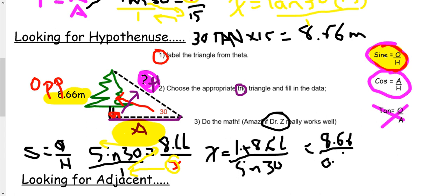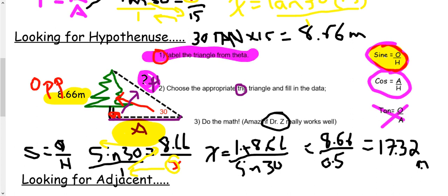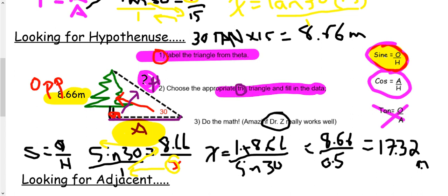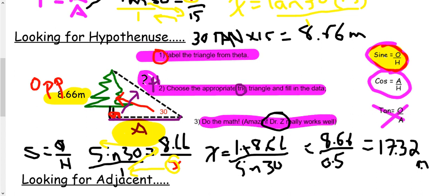In my calculator, I'm going to input 8.66. If I hit sine 30 degrees, I'm going to get 0.5. So 8.66 divided by 0.5, I'm going to get 17.32 — that's 17.32 meters. To recap: we labeled the triangle, chose the trig ratio, did Amazing Dr. Z math, and we had to use our sine button. When we go sine of 30, we have to use the sine button — if we hit cosine or tangent, no good.